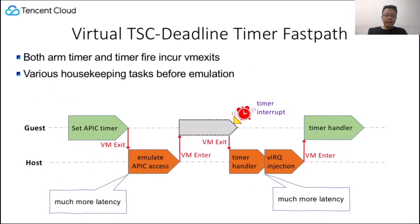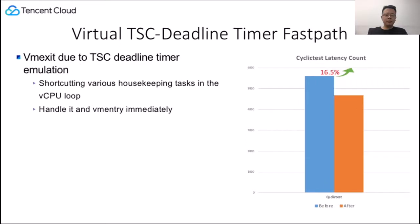Now I will introduce the Virtual TSC Deadline Timer Fastpass. Both ARM Timer and TimerFair incur VM exits, and KVM does various housekeeping tasks before emulation. We implement a Fastpass for emulation of writes to the TSC Deadline MSR. Besides shortcutting various housekeeping tasks in the vCPU loop, the Fastpass can also deliver timer interrupts directly without going through KVM request pending timer, because it runs in vCPU context. We also implement a Fastpass for the preemption timer VM exit. The VM exit can be handled quickly, so it can be performed with interrupts off and return directly to the guest. We can observe timer test latency reduced by 16.5%.